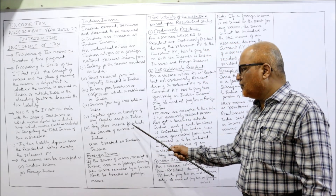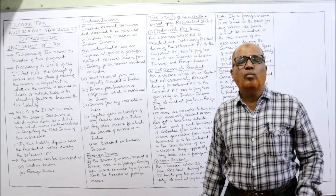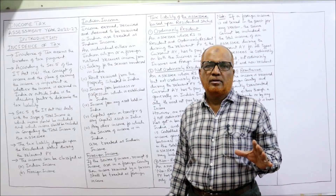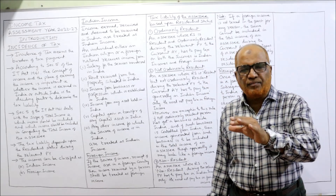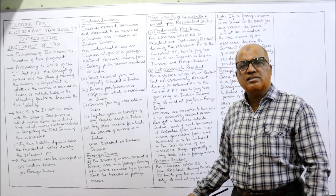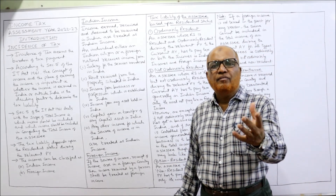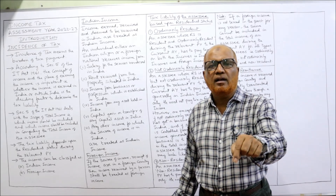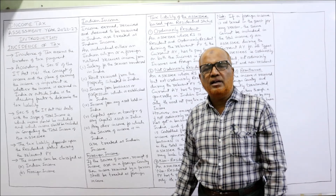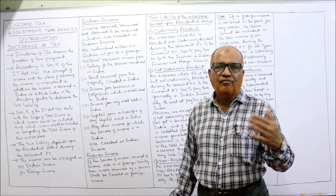The last provision is an open-ended one: any other income which has a source in India is treated as Indian income. The Income Tax Act has been very careful — it will not specifically list only those cases as Indian income. So any income, whether earned by an Indian national or a foreign national, if it has a source in India, will be treated as Indian income.